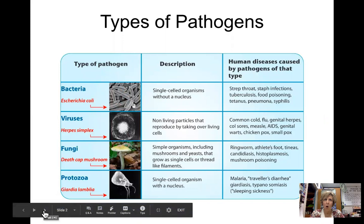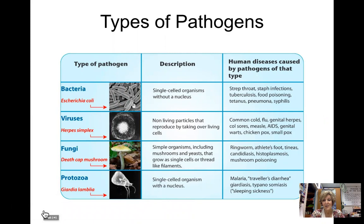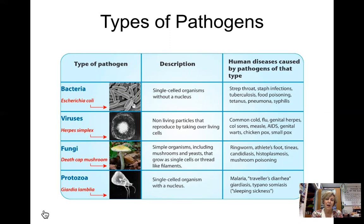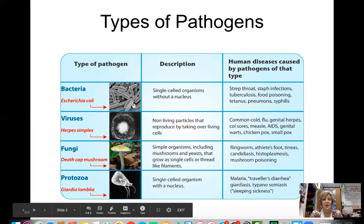The first thing we need to talk about is what things are attacking us — we call those things pathogens. A pathogen is something that can make you sick. We have four basic types: bacteria, which are cells; viruses, which are non-living particles that hijack our cells to reproduce; some fungi that are pathogenic, like yeast infections or ringworm; and some protozoans, which are one-celled organisms like the protozoan that causes malaria and giardia, which causes diarrhea.